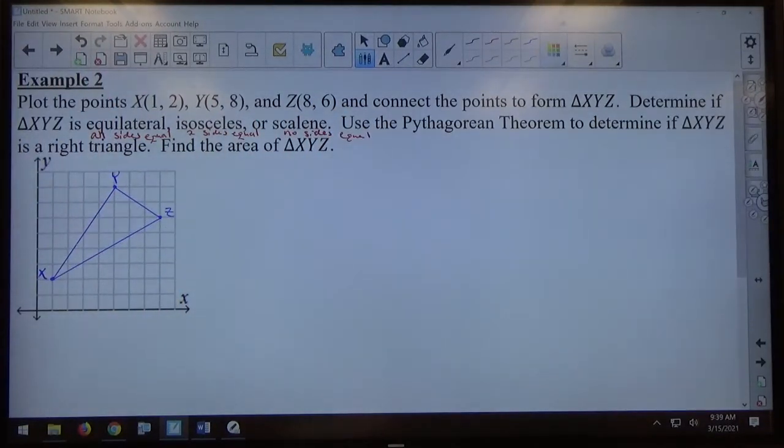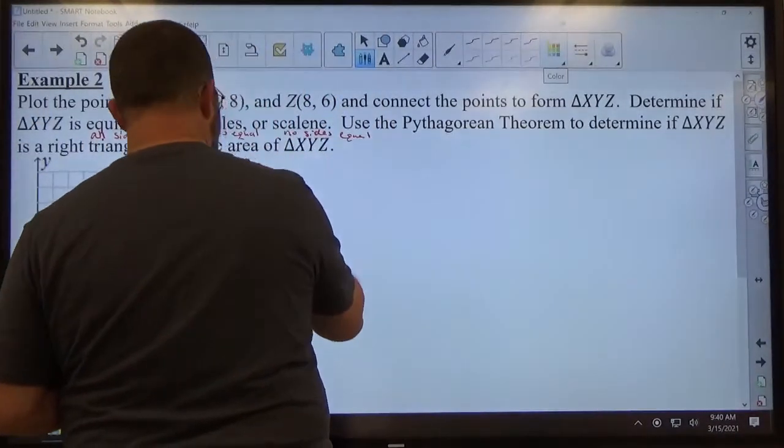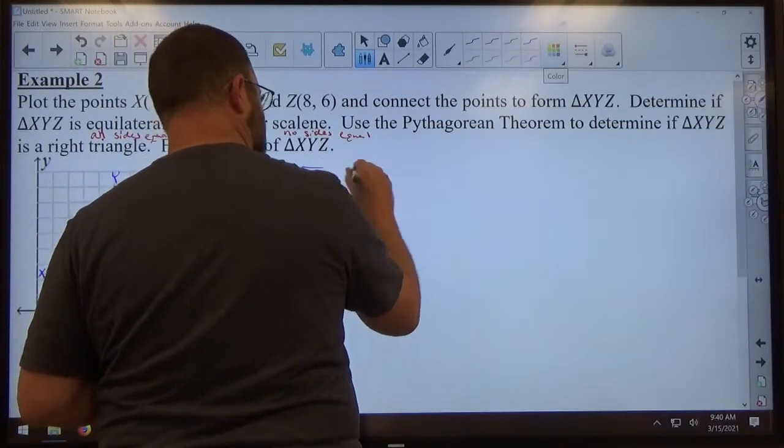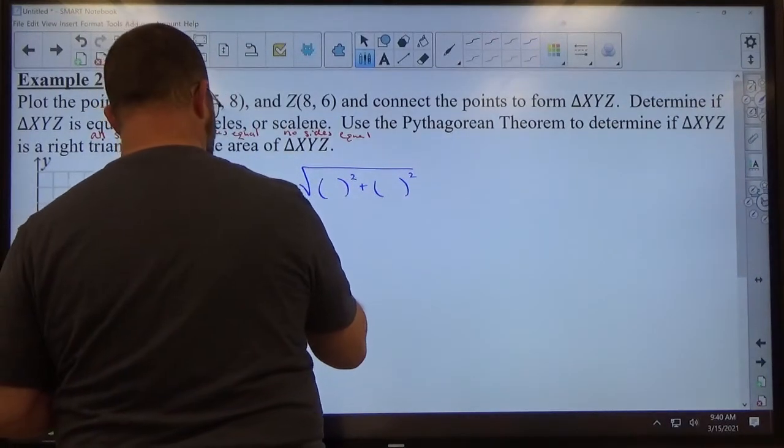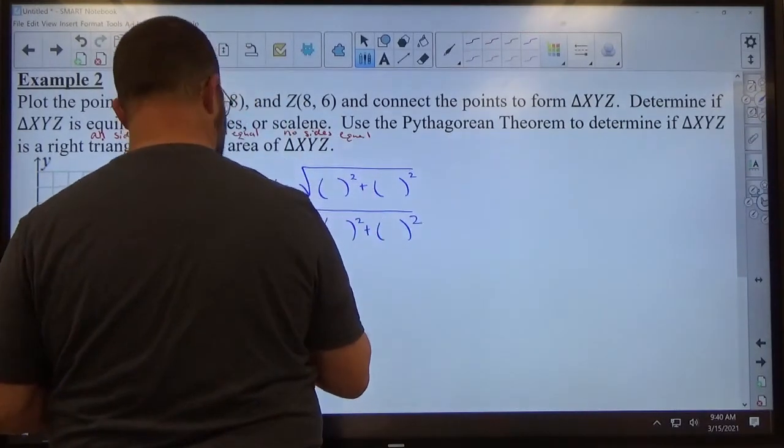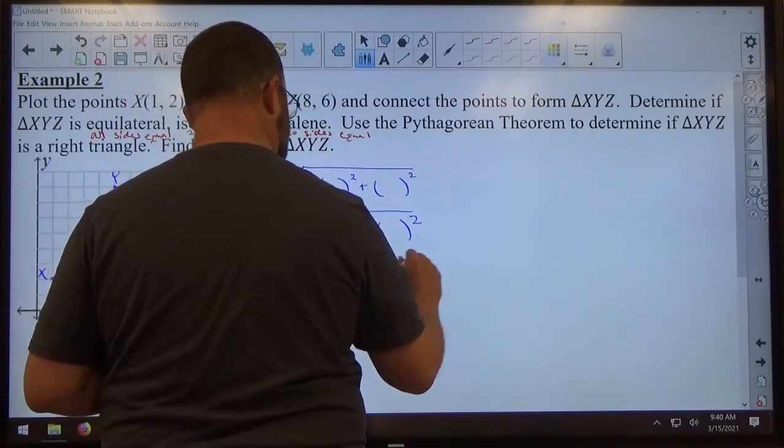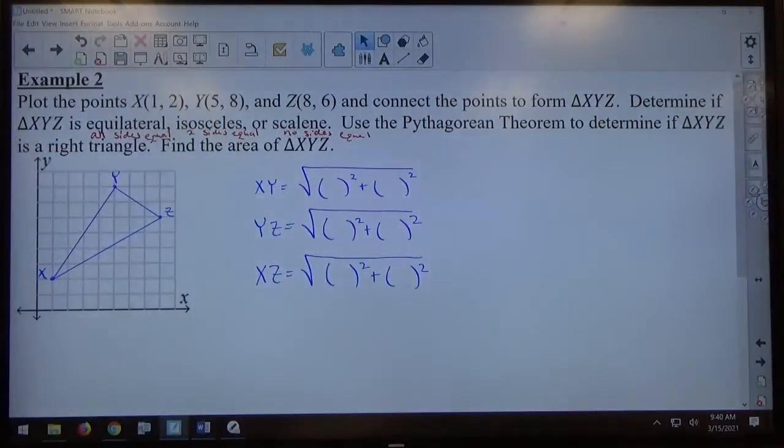Isosceles means two sides are equal, and scalene means no sides are equal. So if I'm going to determine if it's equilateral, isosceles, or scalene, I'm going to have to find the length of all three sides, right? So just basic use the distance formula three times. And again, if we consider the distance formula here, I want to figure out what XY equals, what YZ equals, and what XZ equals. For me, the distance formula always looks like that. I create that structure. I simply have to fill in those parentheses with how far apart the X's and the Y's are from each of these points.